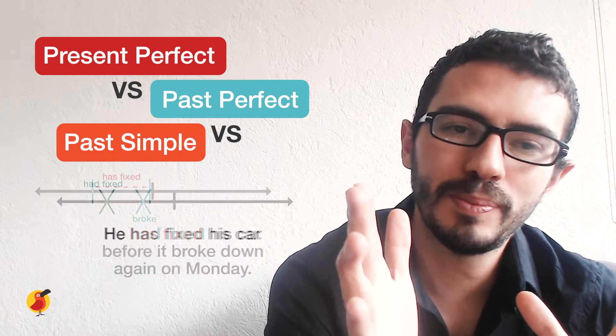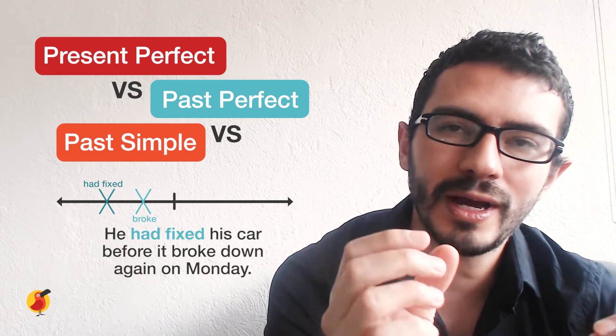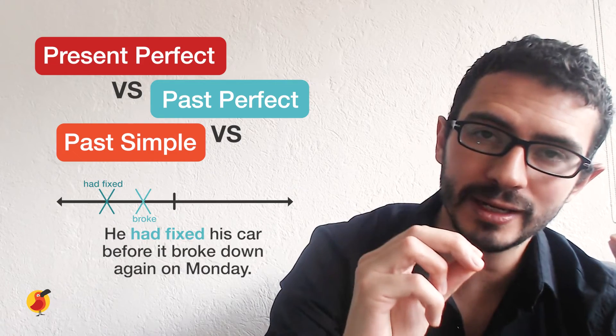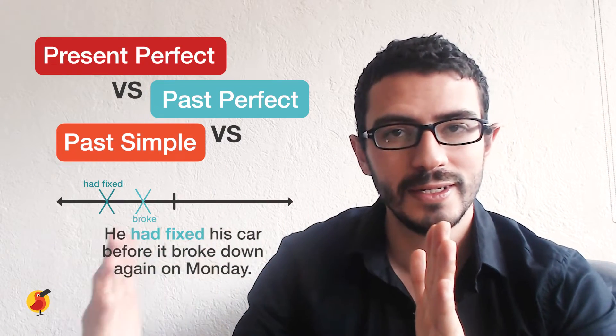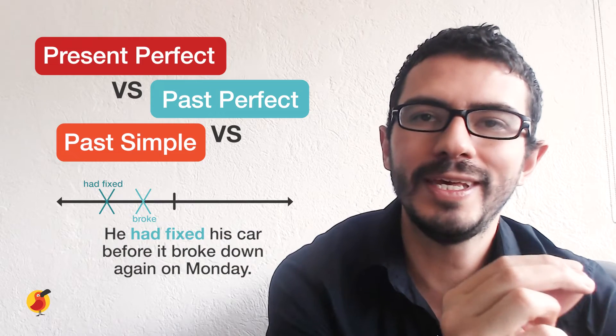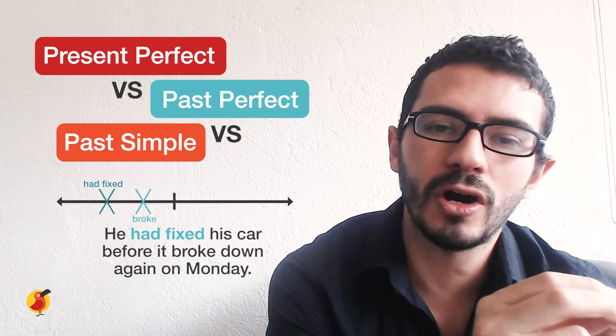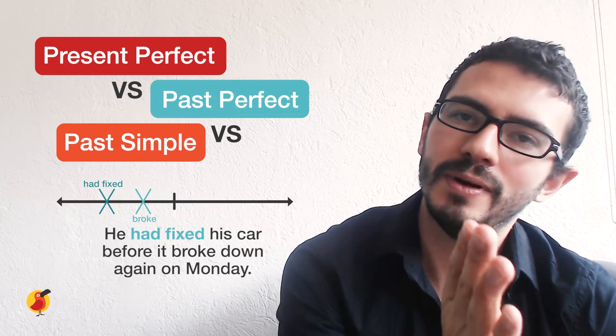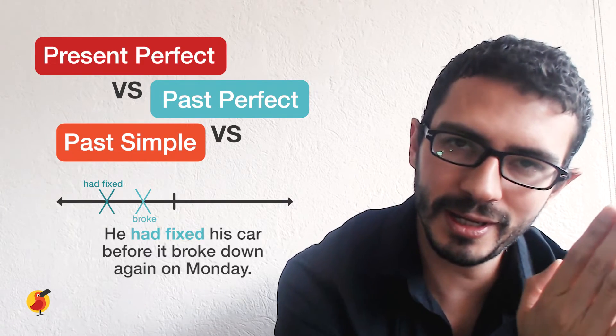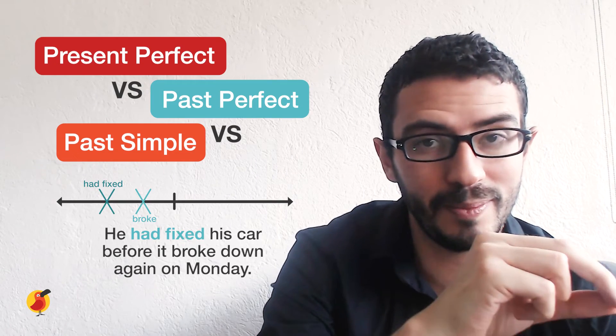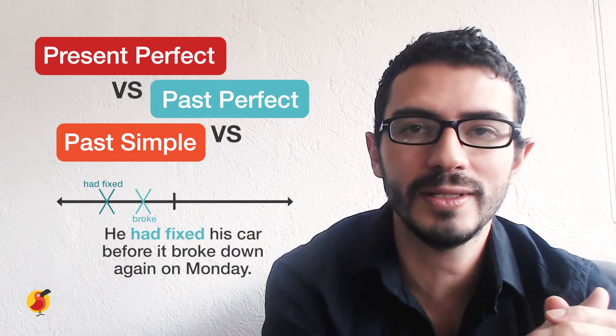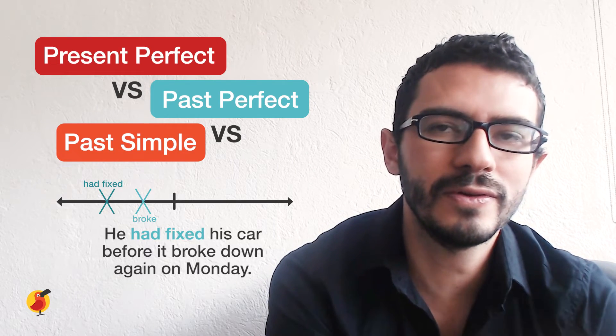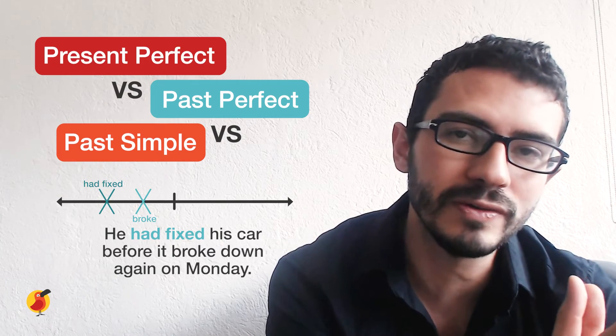And the last one would be the past perfect. When we have something that happened in the past, it is affecting until some point in the past, but it's not relevant to the point of now. So he had fixed his car before it broke down on Monday. So from before till Monday, it was fixed, but it broke down on Monday and now to the now it's not fixed. So you use this to give further detail about things that are happening and comparing two events.